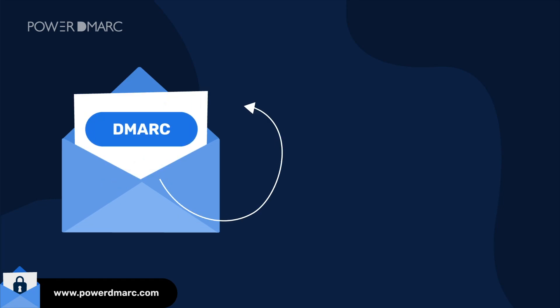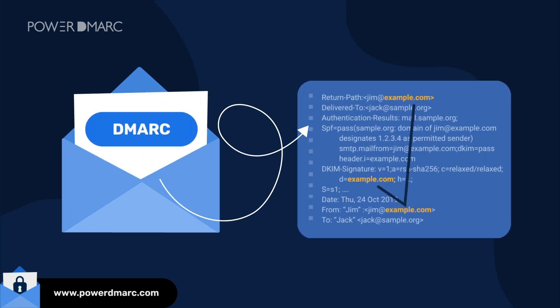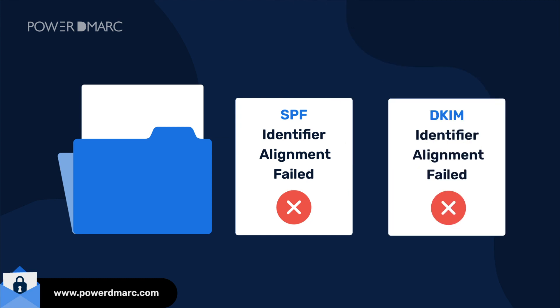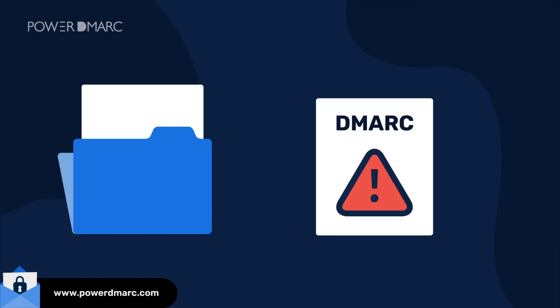DMARC uses domain alignment to check whether an email is actually originating from where it is claiming to be. If an email fails both SPF and DKIM identifier alignment, DMARC will also fail for that message.